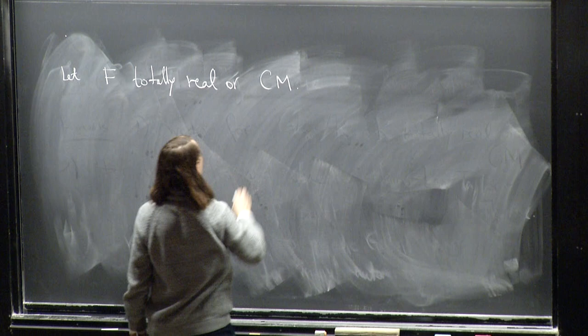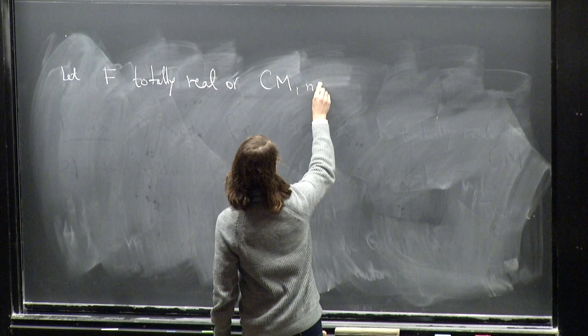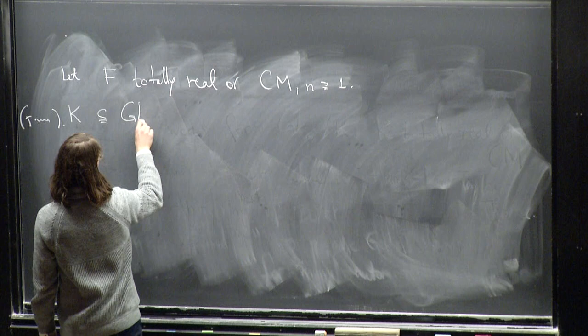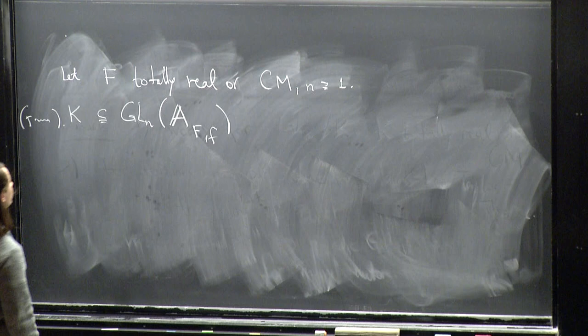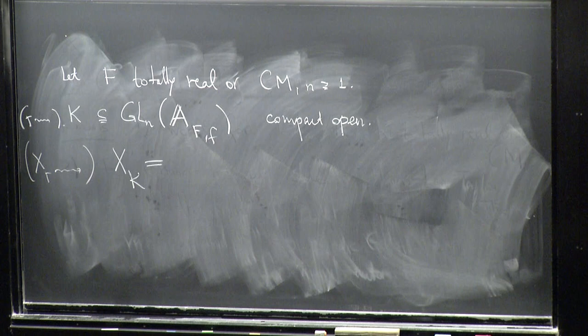So let's start with any totally real OCM field. And for some reason, I decided to switch notation to f. And so any n greater or equal to 1. Instead of this gamma, I will switch to the adelic setup. So it's a subgroup of the finite adelic, finite adel of this field f. It's a compact open subgroup.